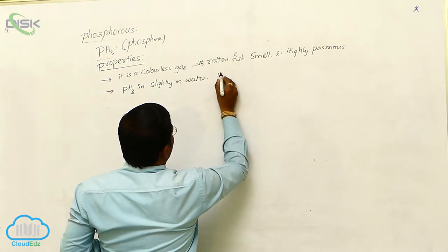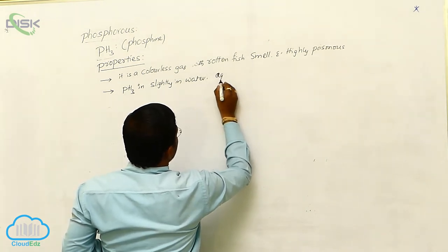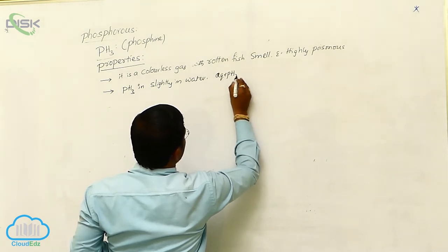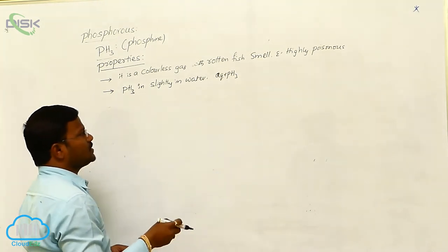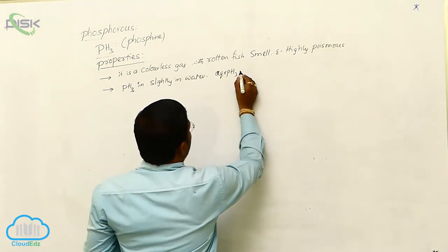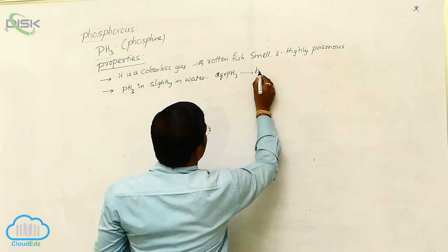Here, the hydrated or aqueous PH3 - what is aqueous PH3 mean? When PH3 dissolved in water, then the resulting solution is aqueous PH3.